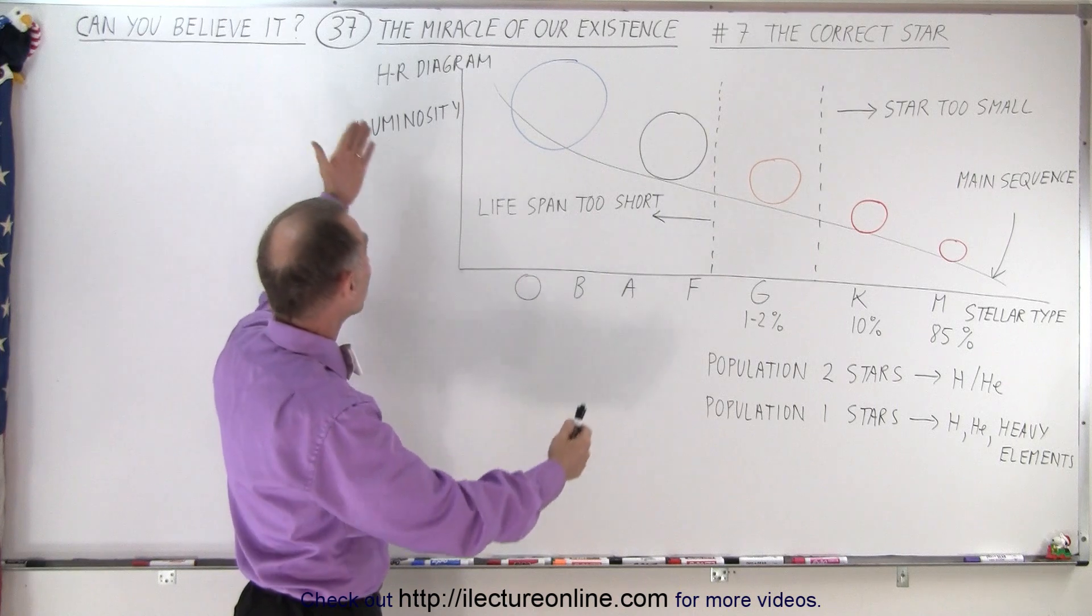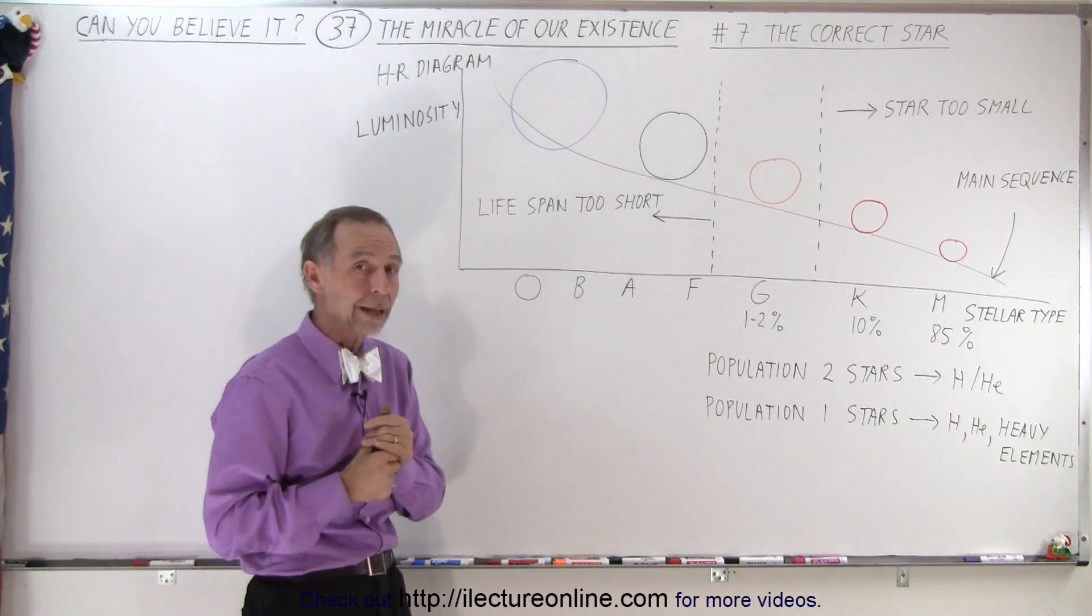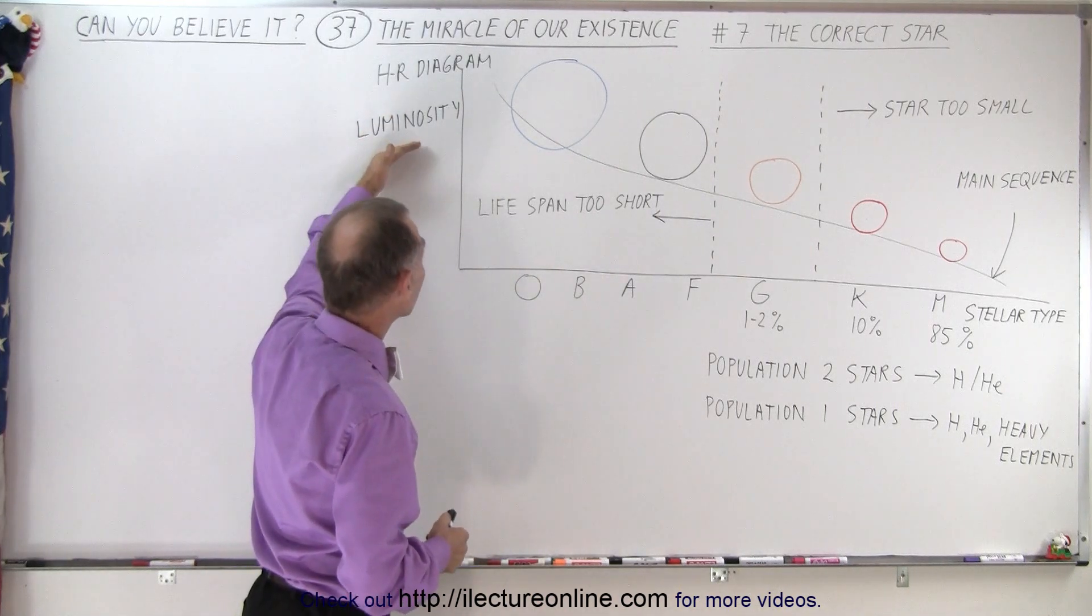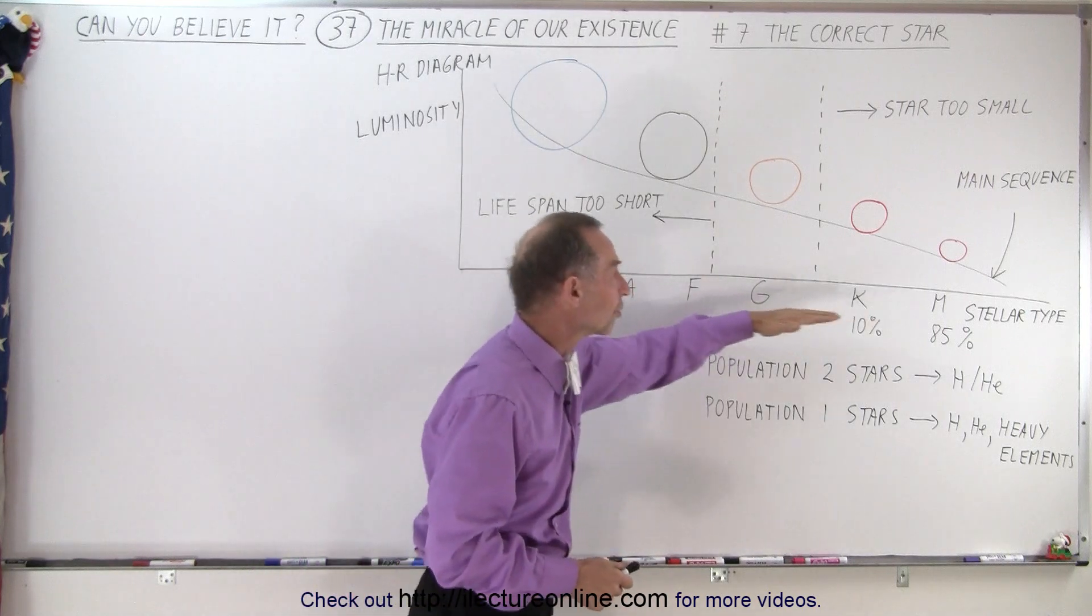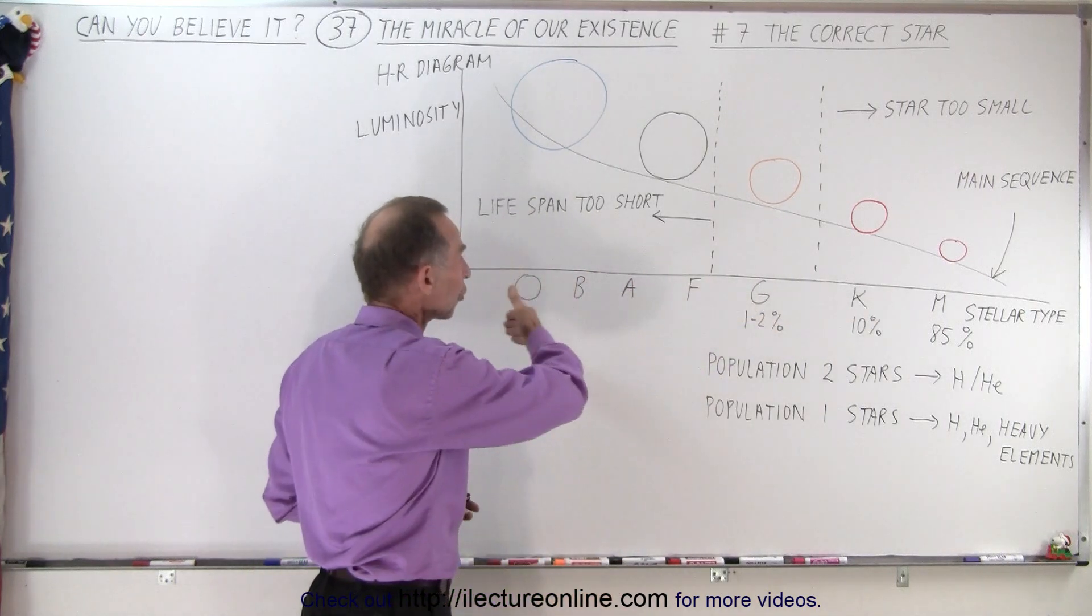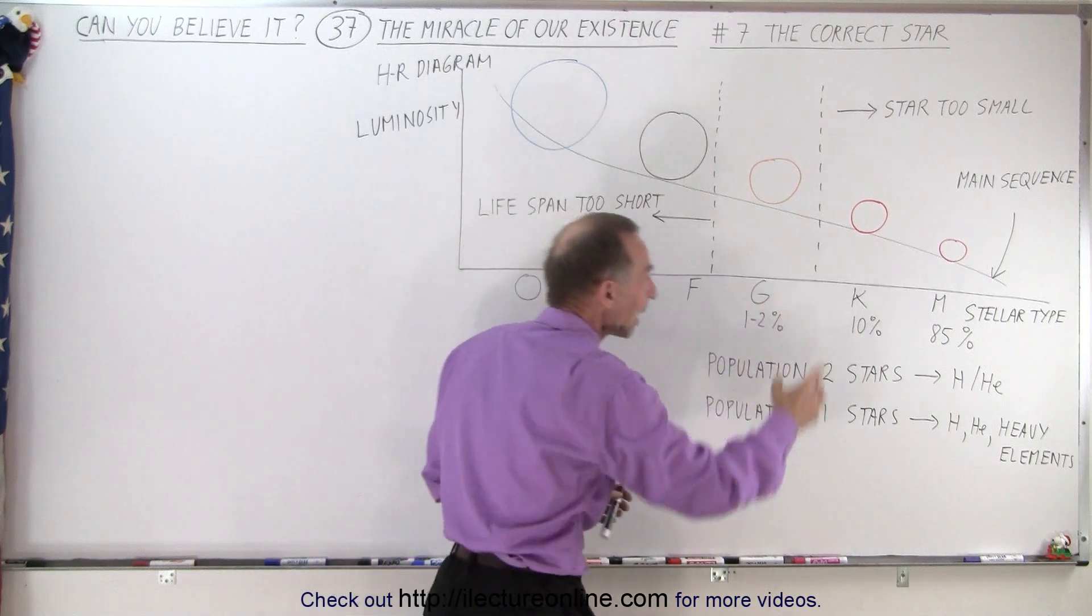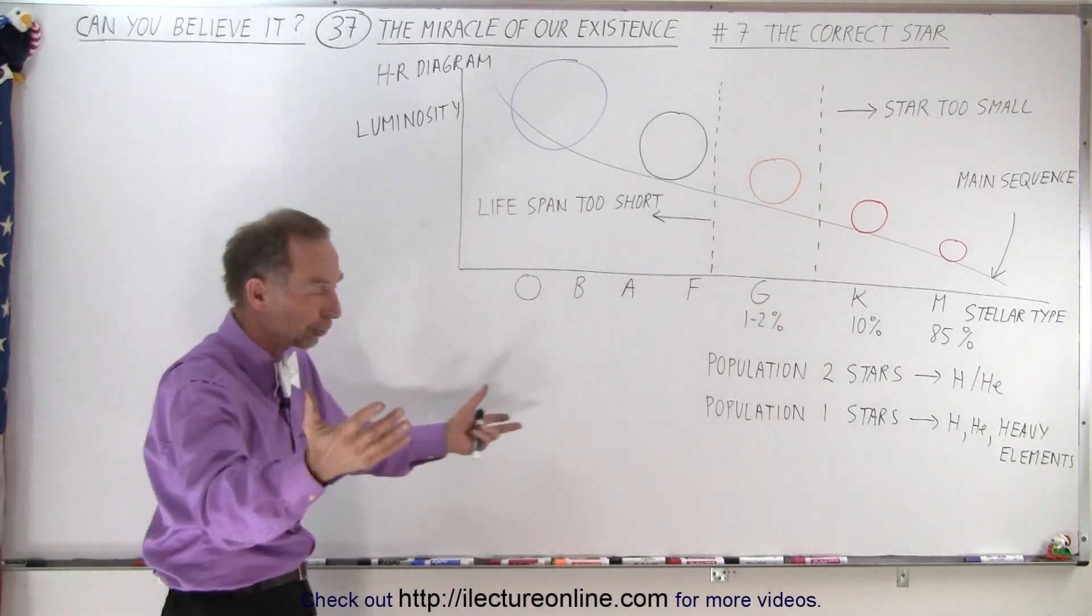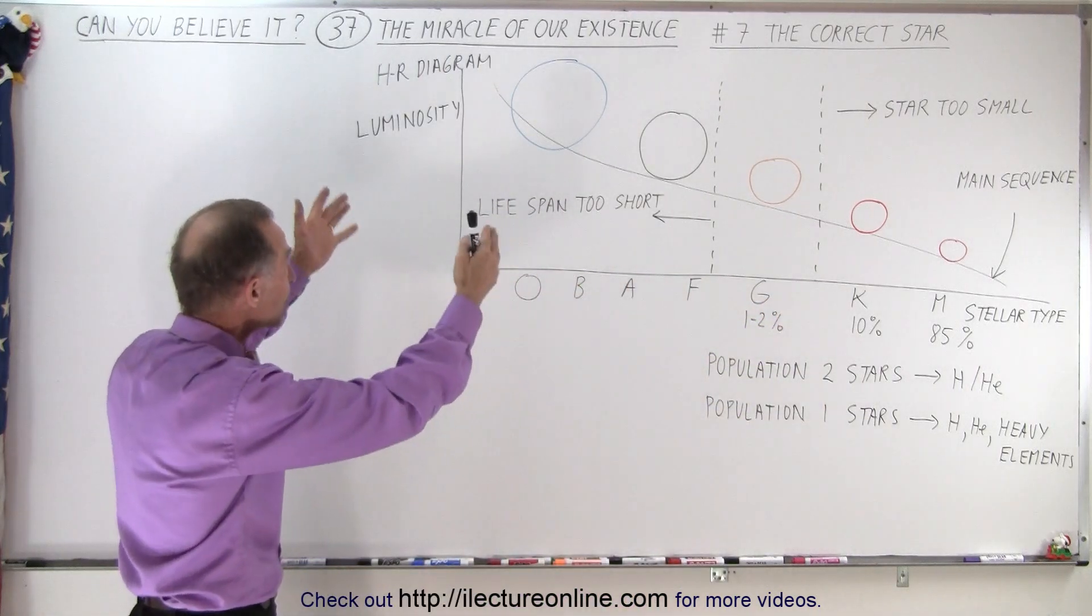And if we plot them on what we call an HR diagram, we then plot luminosity versus what we call stellar type. And you can see that there's all kinds of stellar types, O-B-A-F-G-K-M. And if you take an astronomy class, you'll learn all about that. That's a very unique chart, the HR diagram.